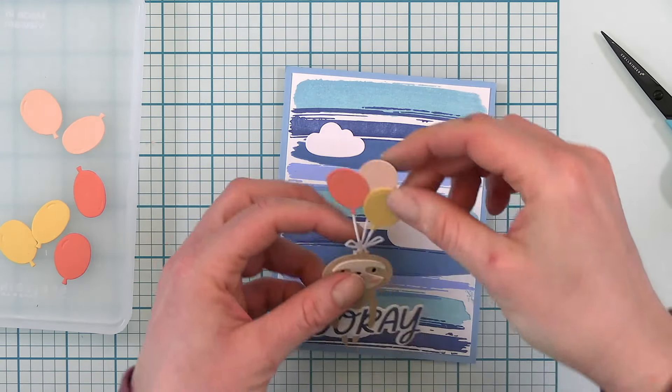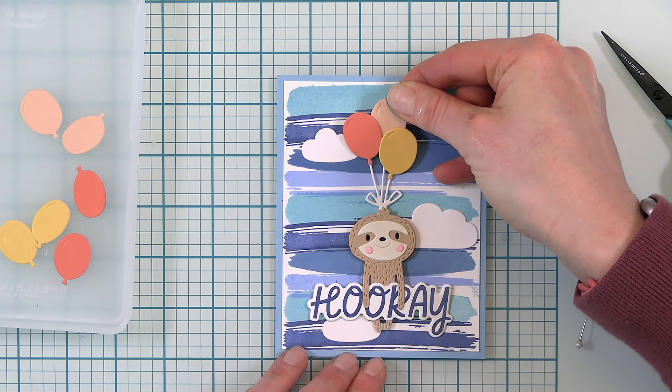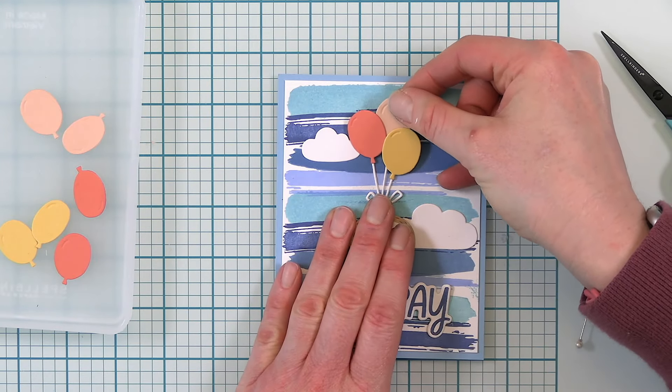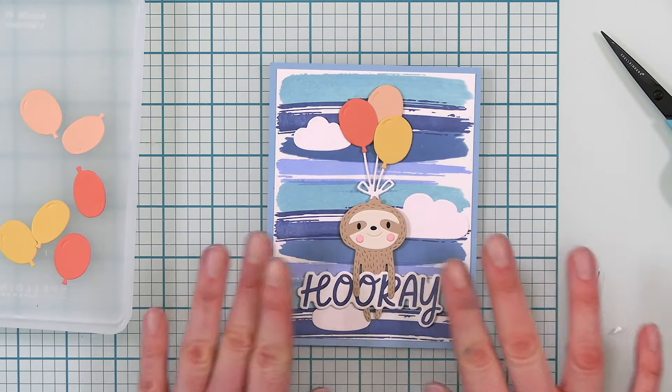To help him stand out a bit more I'm using one millimeter foam adhesive from scrapbook.com to adhere him to my card front. This will add a little bit of a shadow and help him stand out from that background.